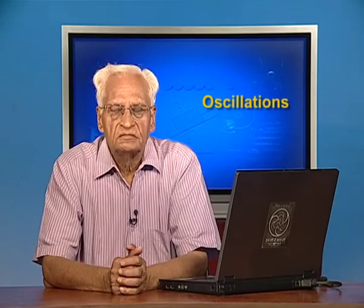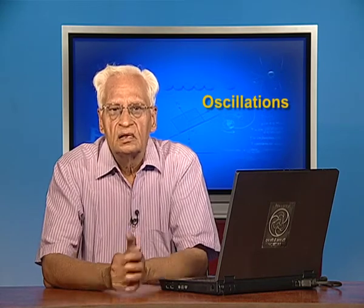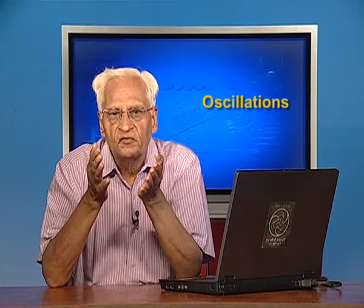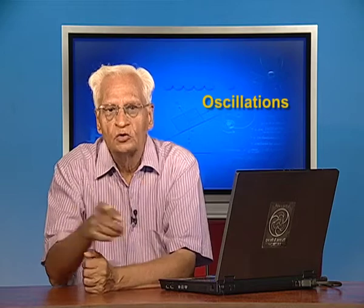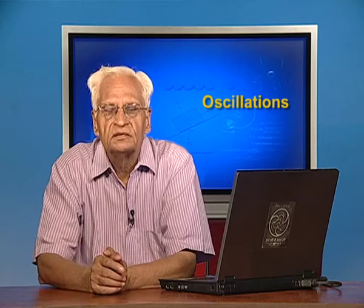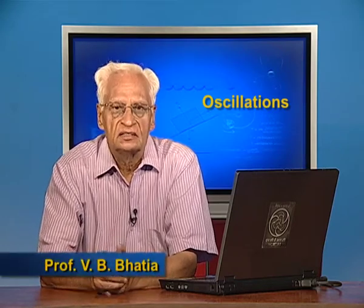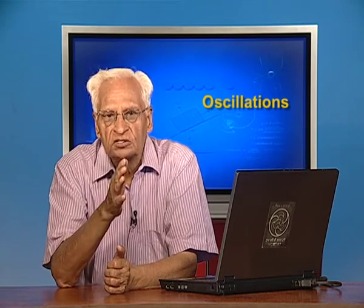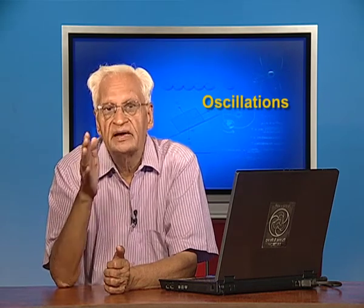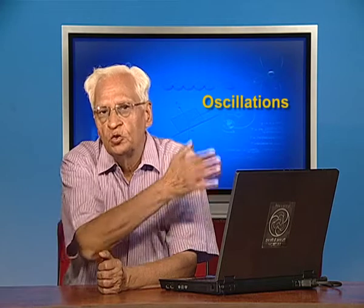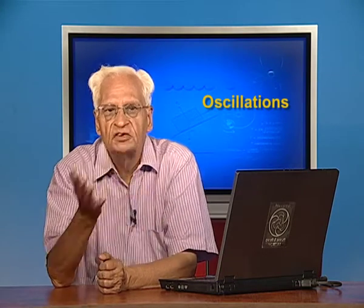We continue with oscillations. In the last lecture we learnt what an oscillation is and that oscillations of a system can take place only about a position of stable equilibrium. We also learnt the characteristics of simple harmonic motion: the acceleration of the system is proportional to the displacement and is in the direction opposite to the displacement.